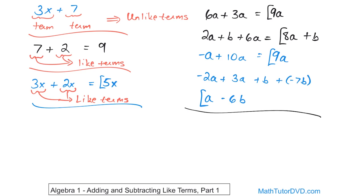What if you have 8a minus 6a? These are like terms because you have an a in each and the variables match. So 8 minus 6 is 2, and the variable a comes along for the ride. The answer is 2a.